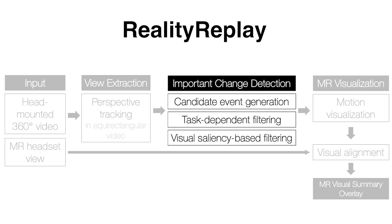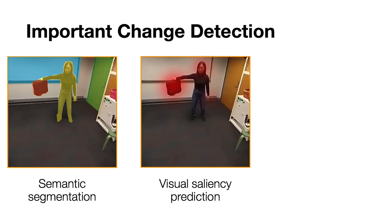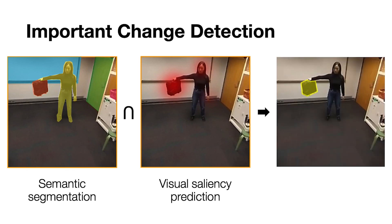After view extraction, Reality Replay uses a novel approach to detect and filter important changes within the primary region by combining semantic segmentation and saliency prediction. First, it generates candidate events for each frame using semantic segmentation. It additionally uses visual saliency-based filtering to predict which parts of the frame are visually salient to determine the importance of the changes. Lastly, Reality Replay combines the results of semantic segmentation and visual saliency prediction to extract only important changes, avoiding distraction and information overload.